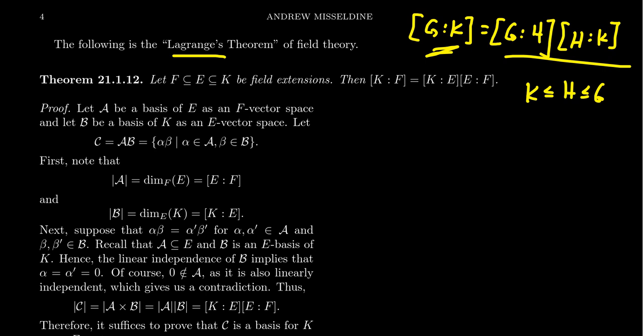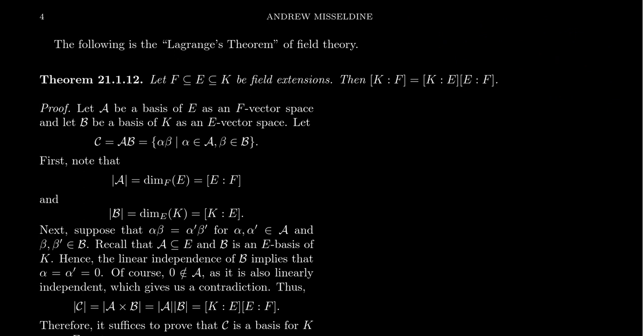The same is also true for field extensions when we look at their degree — some people call it the index of the field extension. Imagine we have three fields: F which sits inside E which sits inside K. K is a field extension of F, it's also a field extension of E, and E is this intermediate field. We claim that the degree of the extension K over F equals the degree of K over E times the degree of E over F. You can factor degrees of field extensions, analogous to how you can factor the number of cosets for groups. That's why we call this the field theory version of Lagrange's theorem.